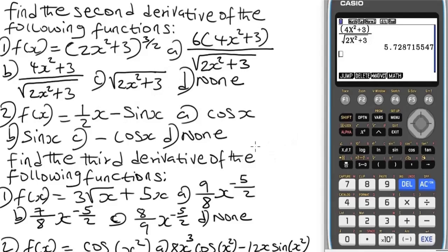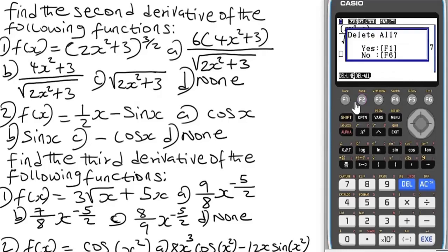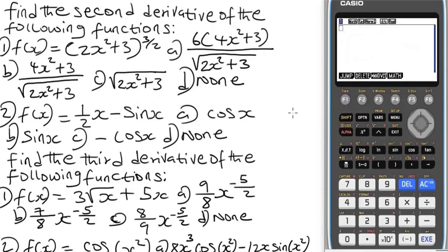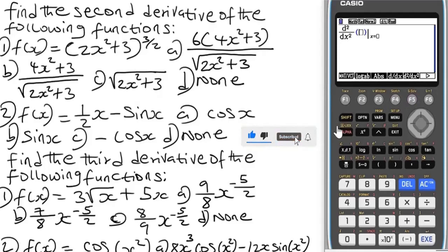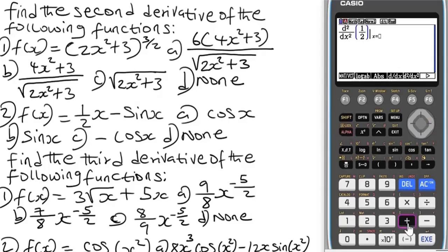Now let's solve question two — the second derivative for question two. Delete everything. For question two we have f(x) = 1/(x − sin x), which is a trigonometric identity function. Go to Math, F4, then second derivative F5. Input the function as a fraction: 1 over (x − sin x). The bracket is balanced. Input the stored value of 2.